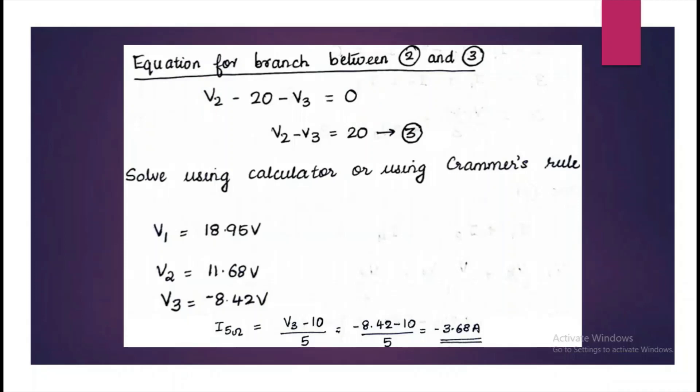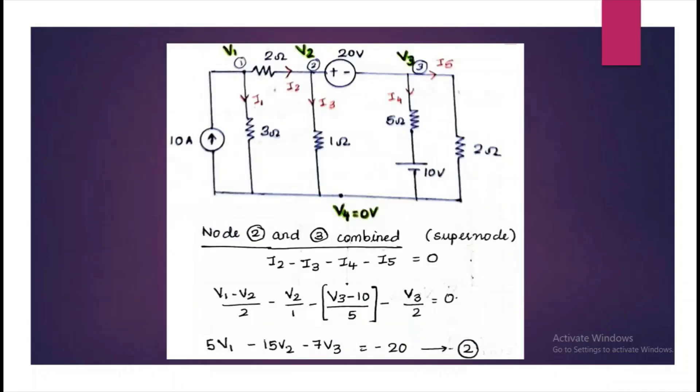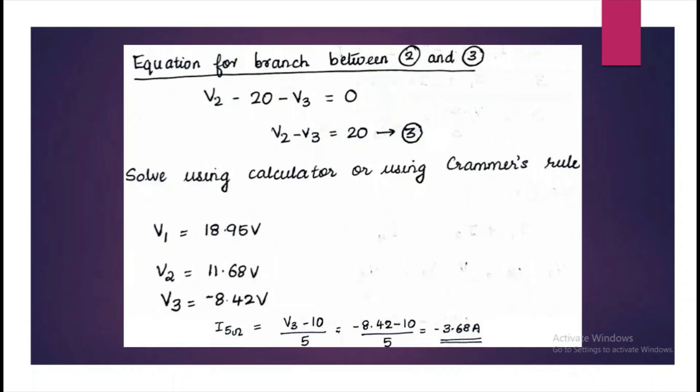Now you can solve this equation using calculator or using Cramer's rule and we will get the values of V1, V2 and V3. In order to get the current through the 5 ohm resistor it is V3 minus 10 divided by 5 ohm. It is nothing but current I4. So substitute the values that we got and then we will get the answer as minus 3.68 Ampere.